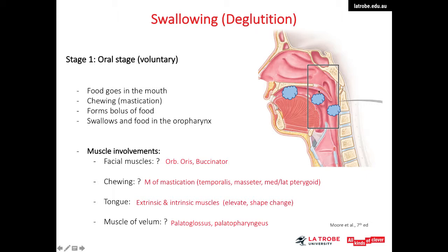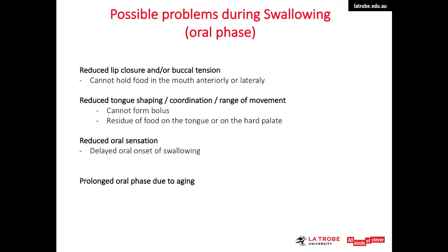The velum also plays an important role; the palatoglossus and palatopharyngeus assist its movement. During the oral stage, potential problems include reduced lip closure, reduced tongue shaping and coordination, and reduced range of movement, which can prevent bolus formation or leave food particles on the tongue or hard palate. Reduced oral sensation can delay the onset of swallowing, and due to aging there can be a prolonged oral phase.